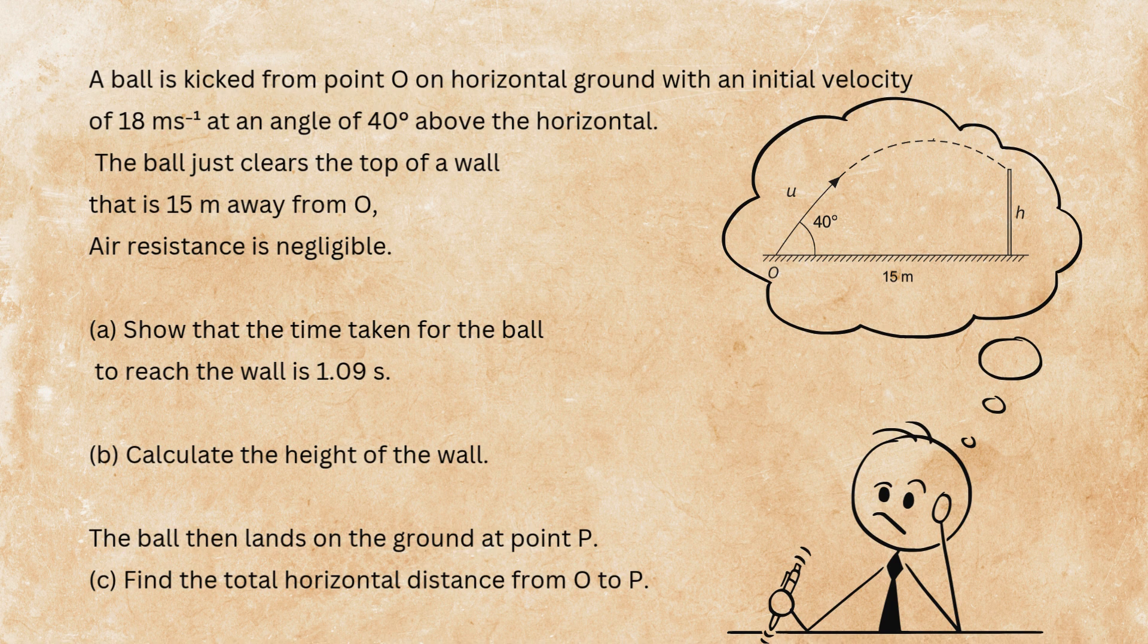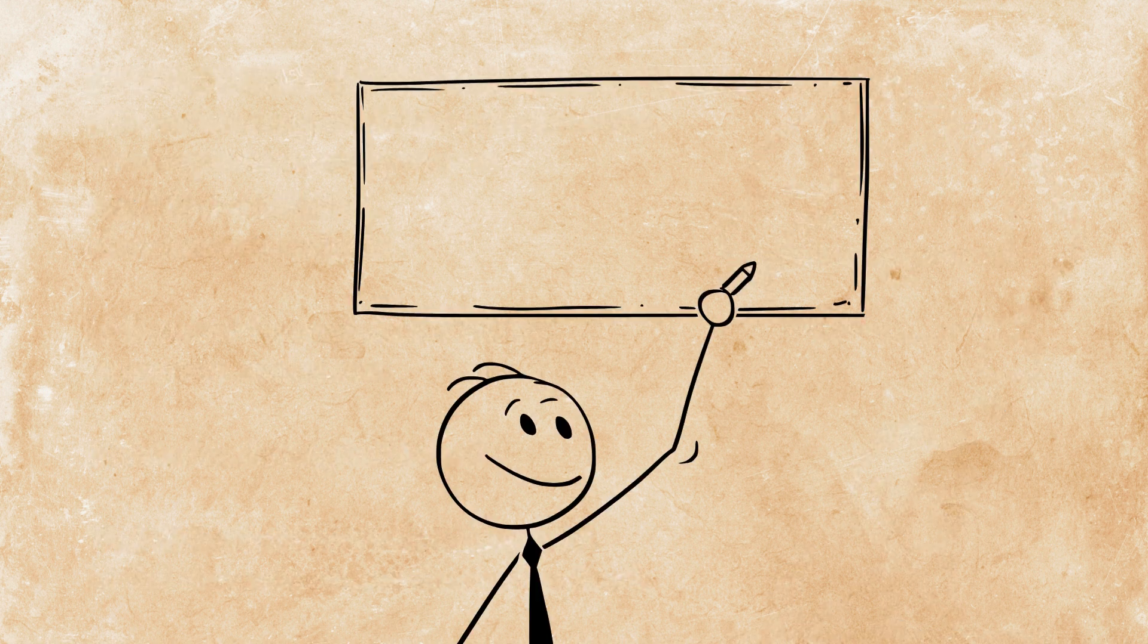Show that the time taken for the ball to reach the wall is 1.09 seconds. Calculate the height of the wall. The ball lands on the ground at point P. Find the total horizontal distance from O to P. Let's get started.